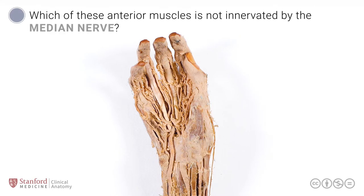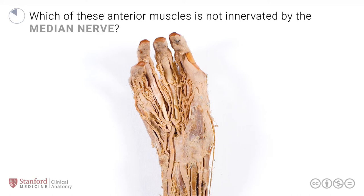Which of these anterior muscles is not innervated by the median nerve? Adductor pollicis is not innervated by the median nerve, unlike its anterior counterparts. It instead is innervated by the ulnar nerve.